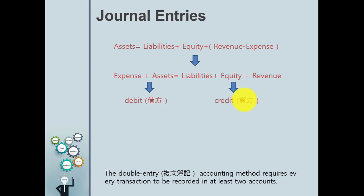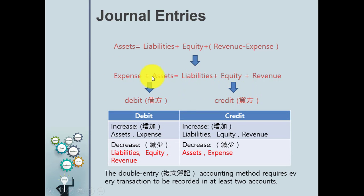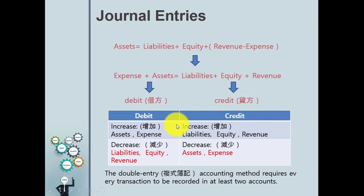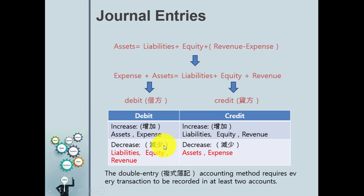In Chinese, we call them jia fang and dai fang. From these rules you can clearly see that when expenses and assets increase, you put them on the debit side. On the other hand, when liabilities, equity, and revenue increase, you reflect the amount on the credit side. When they decrease, it is reversed: assets and expenses decreasing go to the credit side, and liabilities, equity, and revenue decreasing go to the debit side. We follow these rules to reflect entries in our journal.